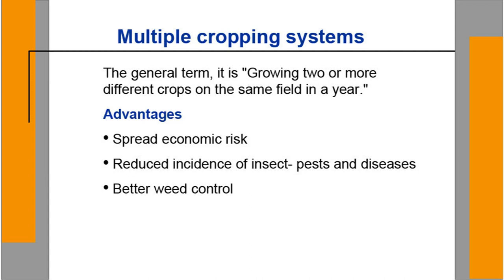Considering the disadvantages of monoculture, people adopted multiple cropping systems, also for economic and profitability reasons. Multiple cropping — sometimes called multi-crop or multi-cropping — is the general term for growing two or more different crops on the same field in a year. Advantages include spreading economic risk: if any problem damages one crop, other crops can recover the economic losses. Multiple cropping also reduces incidence of insect pests and disease, since following rotations means the same host is not available every time.